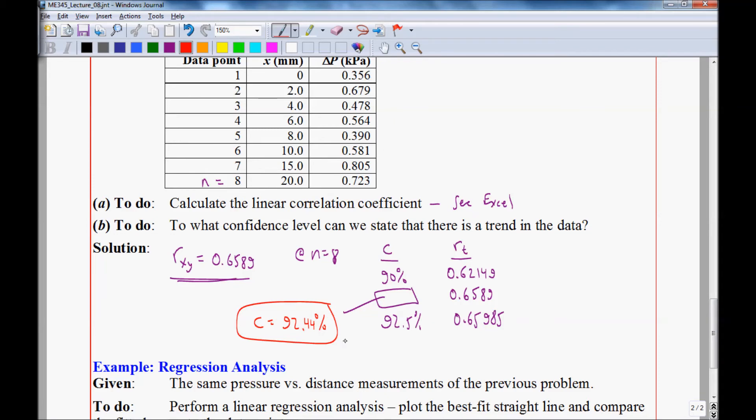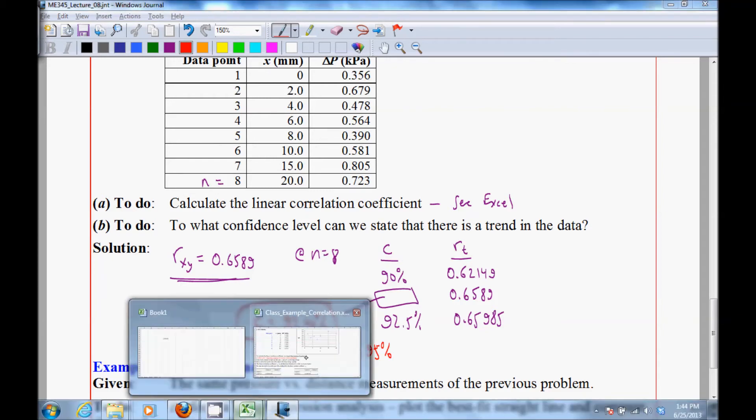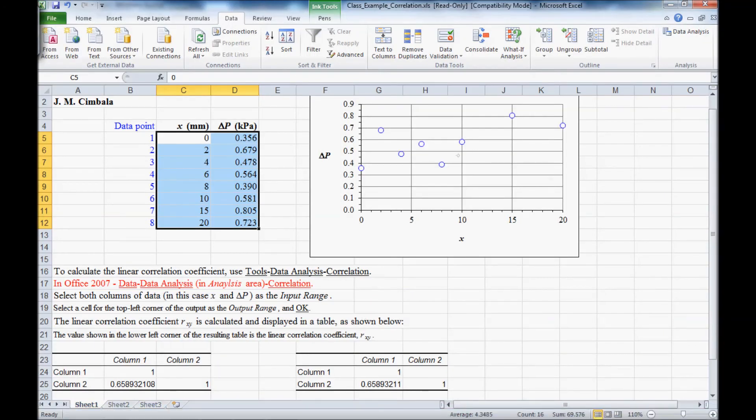And one other comment, this is less than 95%. So to standard engineering analysis, we would say that there is not a trend in these data to standard engineering confidence level. We can actually see that in the plot of these data. It looks like there might be an upward trend, but we can't be 95% confident of that.